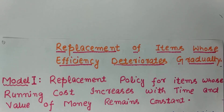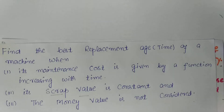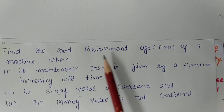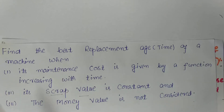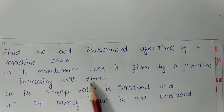The value of money is the quantity of goods that you can exchange for one unit of money — simply, value of money means purchasing capacity of money. Now I will discuss what type of questions are being asked in the examination related to this model. First, you will be asked to discuss the problem of a replacement policy for items whose running cost increases with time and value of money remains constant. Or you will be asked to find the best replacement age or time of a machine.